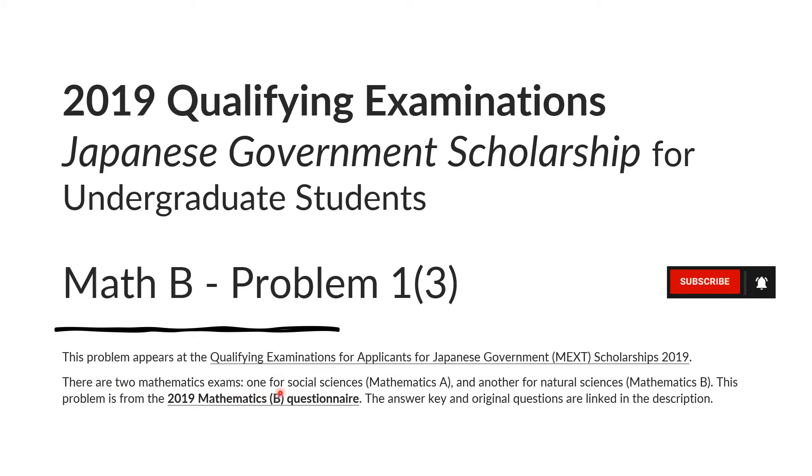There are two mathematics exams, one for Social Sciences Mathematics A and another for Natural Sciences Mathematics B. This problem is from the 2019 Mathematics B Questionnaire. The answer key and original questions are linked in the description.